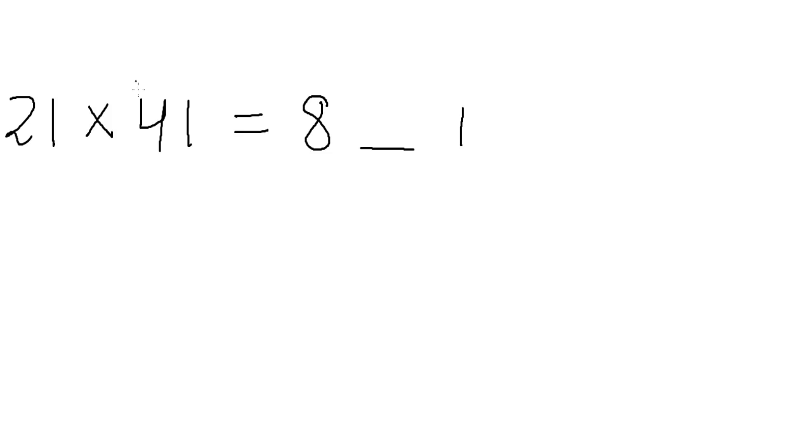To get the middle digit we multiply the numbers in this order: 4 into 1 and 1 into 2. And this product, both these products we add them. So 4 into 1 is 4 and 1 into 2 is 2. So 4 plus 2 is 6. So 861 that is our answer. Let's look at another example.